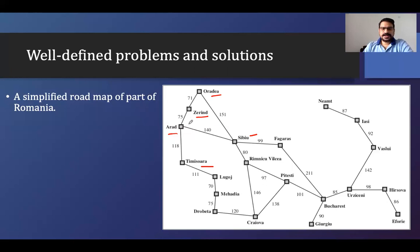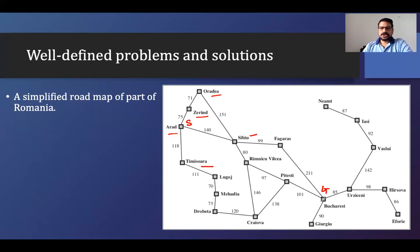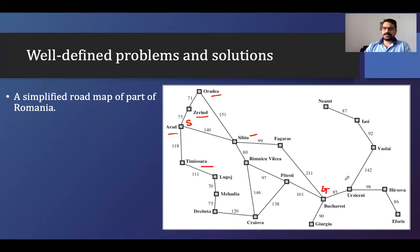Let's say our starting state is Arad and our goal is to reach Bucharest. So I am at Arad and I need to reach Bucharest. How do we define this problem?